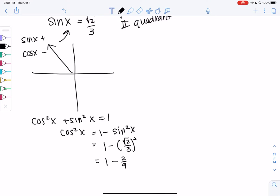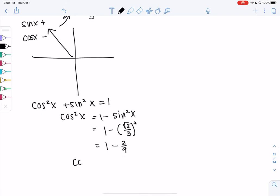So we get 1 minus 2 over 9. Square root 2 becomes 2. 3 squared becomes 9, and this becomes 7 over 9. So cosine squared x is 7 over 9.